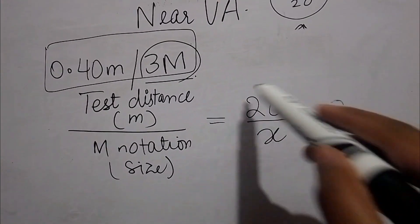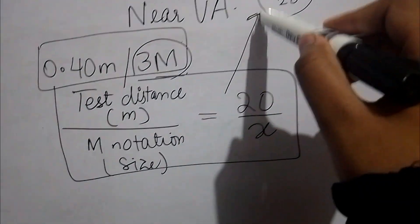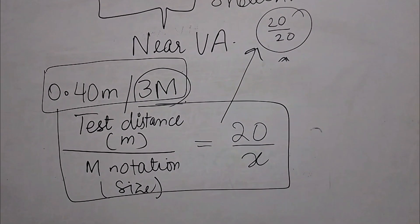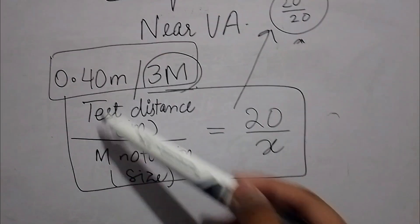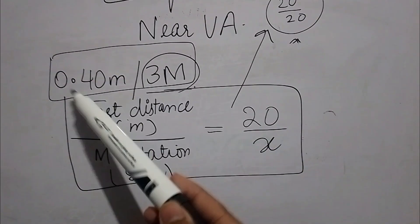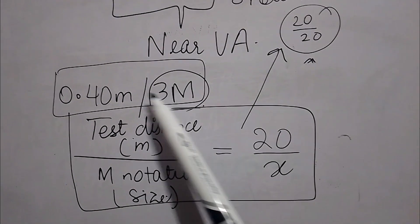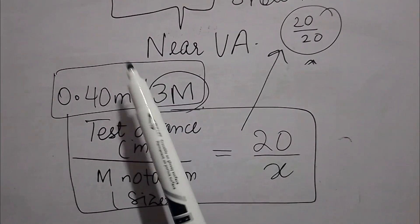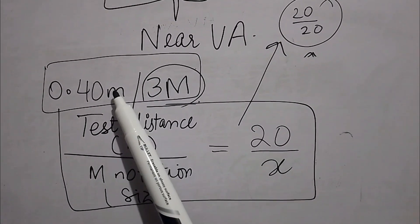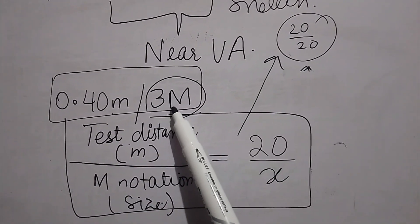Here, by using this formula, this complete formula, you can convert the reading into the Snellen format. The testing distance and the size is similar to the readings you have noted from the M-notation chart. I have told you how you are going to record the M-notation: you will write the testing distance and the size of the letter that the patient reads.